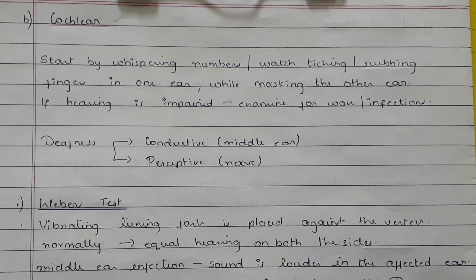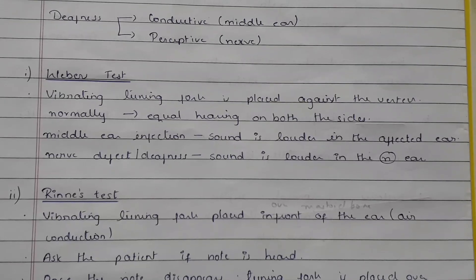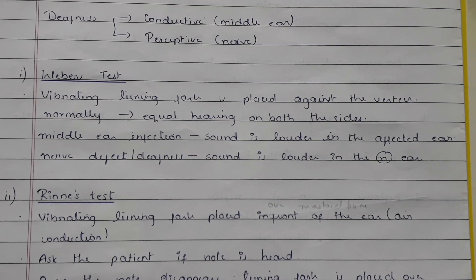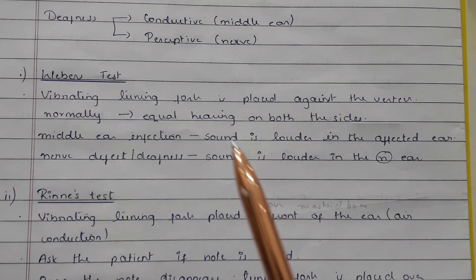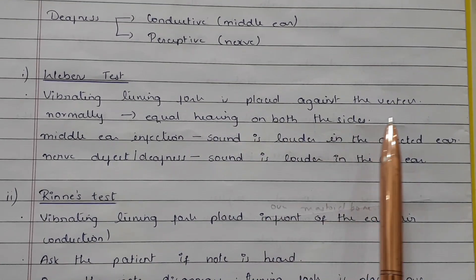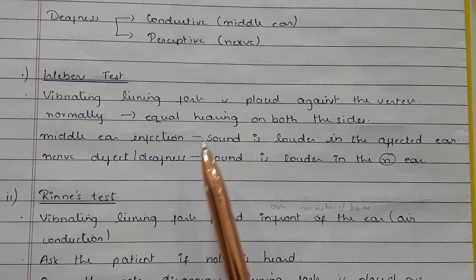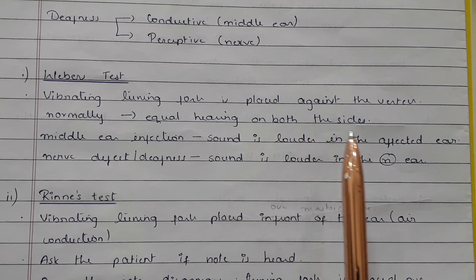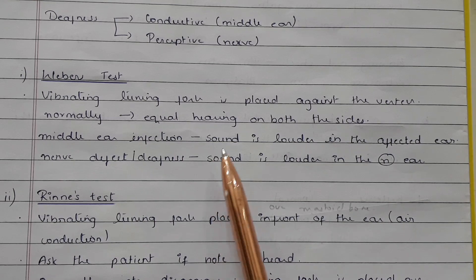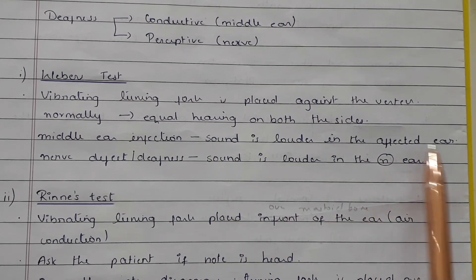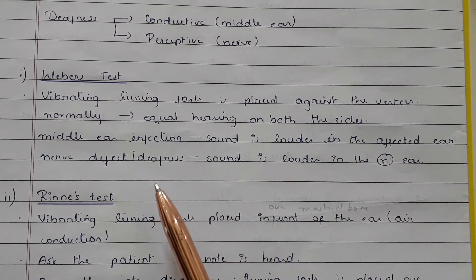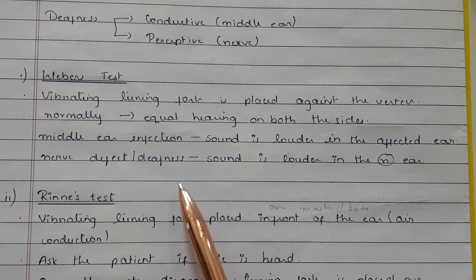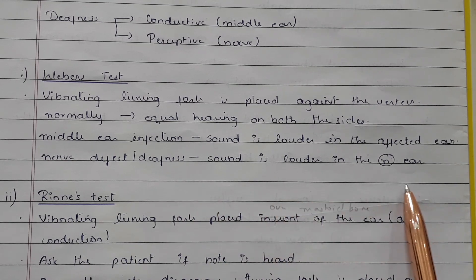Deafness can either be conductive, involving the middle ear, or perceptive, involving the nerve. For Weber's test, a vibrating tuning fork is placed against the vertex. Normally there is equal hearing on both sides. If there is a middle ear infection, the sound is louder in the affected ear. In case of nerve deafness, the sound is louder in the normal ear.